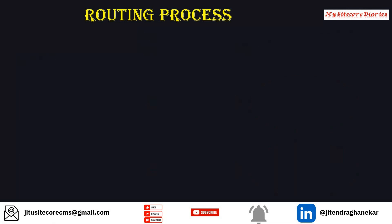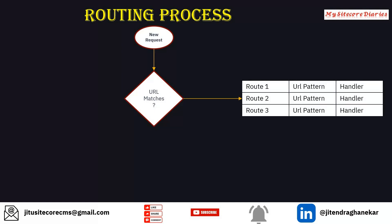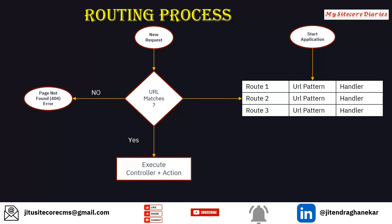Now let's see the routing process. A new request comes to the MVC handler. What it does is it first finds the URL matches from the routing table. The routing table gets created at the start of the application — it builds the routing table and stores different routes with the corresponding URL pattern and the handler for that. Once a request comes, it checks whether that route is available. If that route is not available, then it shows the page not found error, that is a 404 error. If it finds it, then it executes the corresponding controller and action. That controller action is stored in the handler, which tells you which controller and which action should get executed, and then the response is created.